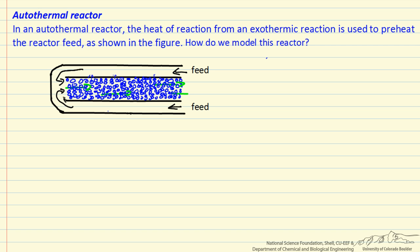In this example I'm going to look at an autothermal reactor, which means that the heat of reaction from the exothermic reaction is used to preheat the reactor feed, and so the figure is an annular region around the packed bed reactor.